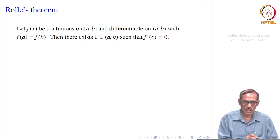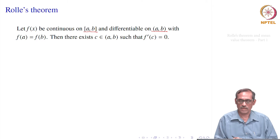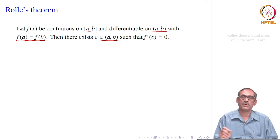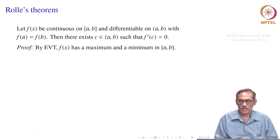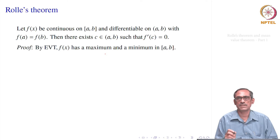Let us formulate Rolle's theorem. It says: f(x) is a continuous function on the closed interval [a, b], f(x) is differentiable on the open interval (a, b), and f(a) = f(b). These are the three conditions. Under these conditions, there exists a point c in the open interval (a, b) where f'(c) = 0. That is the main idea of Rolle's theorem.